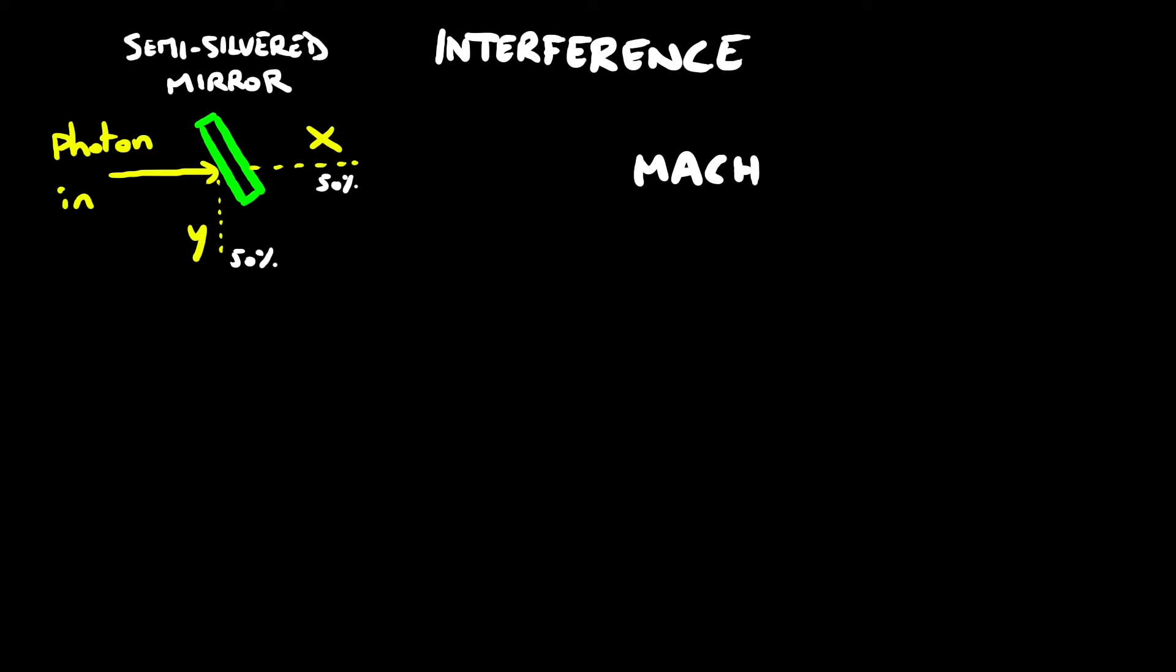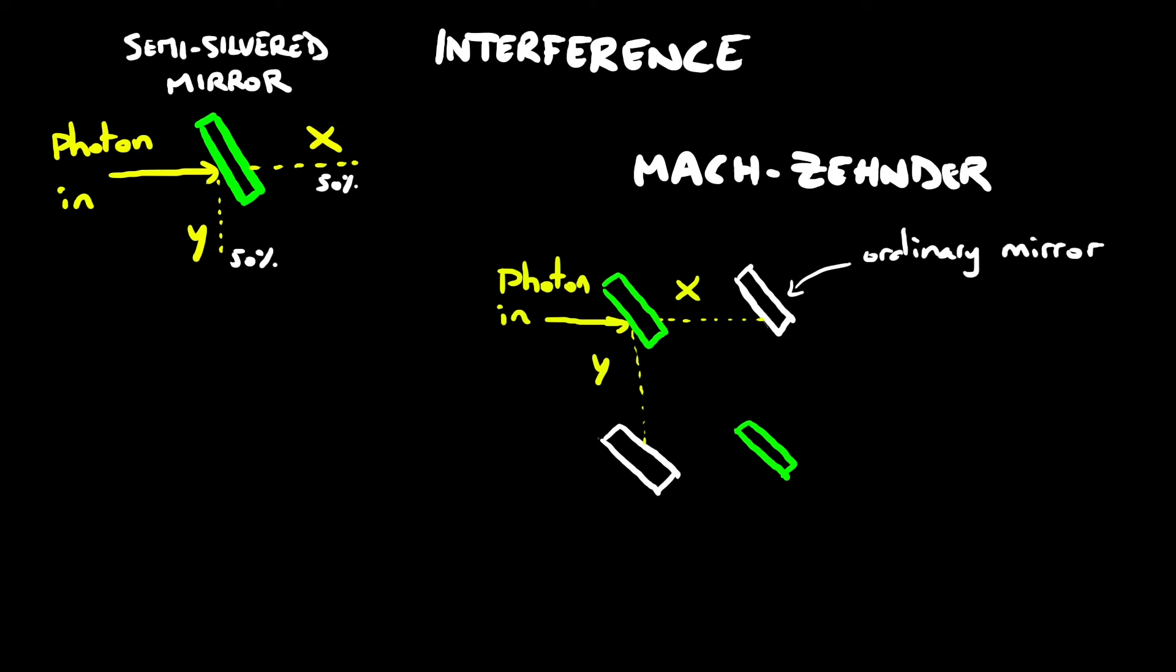The experiment is known as the Mach-Zehnder interferometer, in which a photon is sent through a particular setup of two semi-silvered mirrors and two ordinary mirrors. The photon comes in through the first semi-silvered mirror. It sometimes goes in the direction x and sometimes goes in the direction y with even probabilities. The ordinary mirrors are merely there to steer the photon from the first to the second semi-silvered mirror.